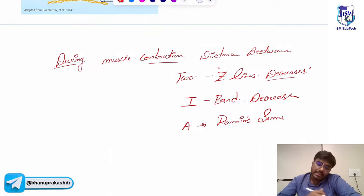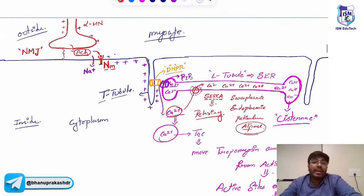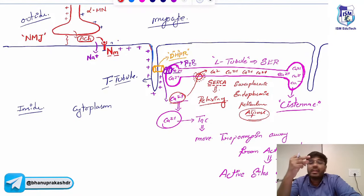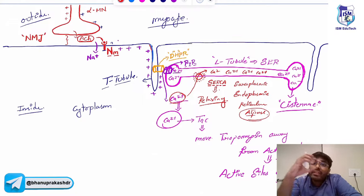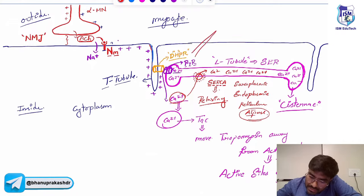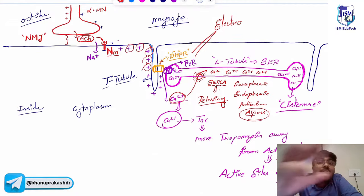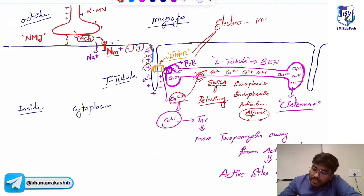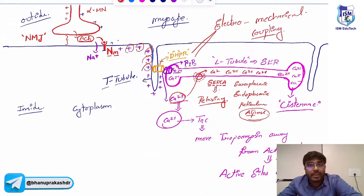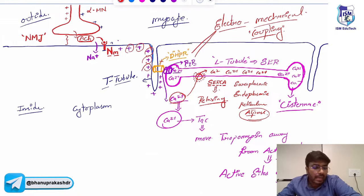During muscle contraction: first electrical activity — depolarization — activates the DHPR channels. The DHPR channels mechanically open the RYR channels. This process is called electromechanical coupling. Electromechanical coupling is seen during muscle contraction, where DHPR channels are opening the RYR channels.